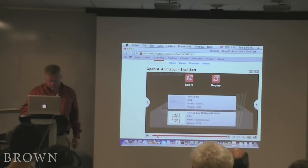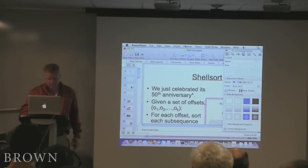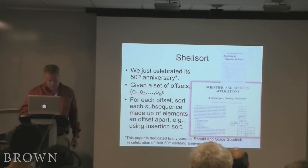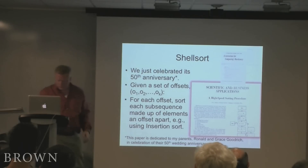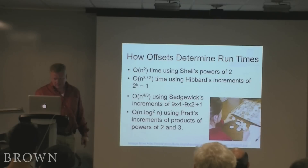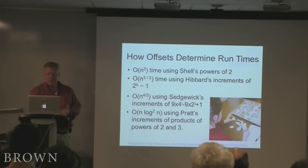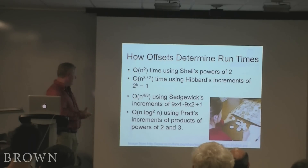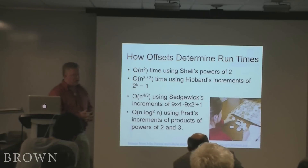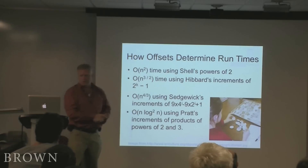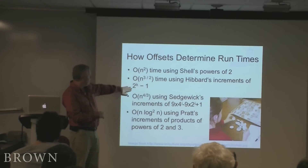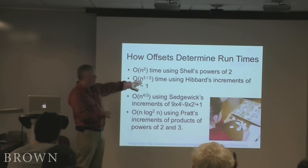It's kind of cool that our field is now mature enough to celebrate that. This is an excerpt from that original paper — it's only three pages. Since then, people have dedicated considerable research attention to optimizing this algorithm, looking at various offset sequences that result in good running times. If you just use the powers of 2 from Shell's original paper, you get a running time that's O(n²). But if you use one less than powers of 2, you get an O(n^(3/2)) running time.